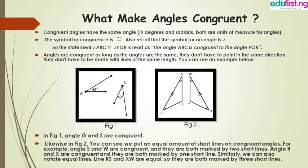In our previous class in trigonometry, we made mention of how angles are measured. We established that angles are measured in degrees and in radians. So both are units of measure for angles. Congruent angles have the same measure whether they are in degrees or in radians.